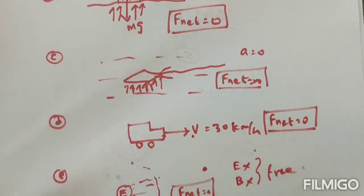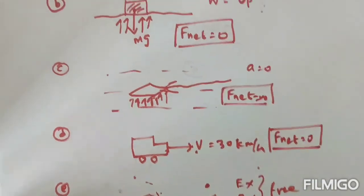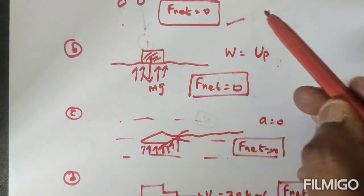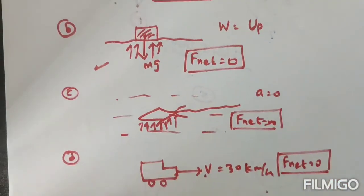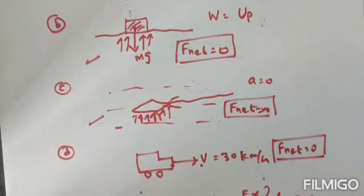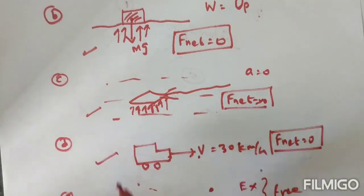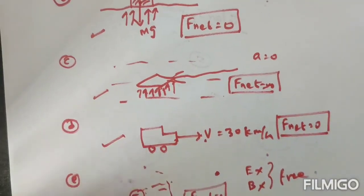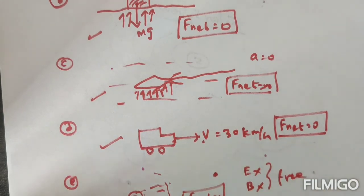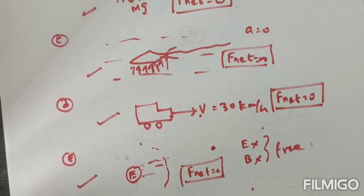If you observe all five cases — the rain example, the floating body, the kite stationary in the sky, the car moving with constant velocity, and the electron free from all fields — in all the questions the net force is zero. Thank you.